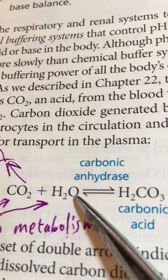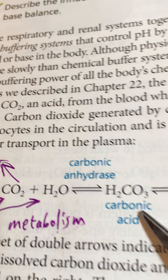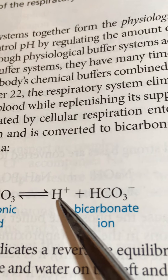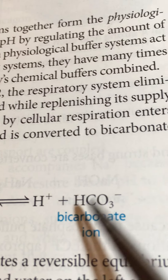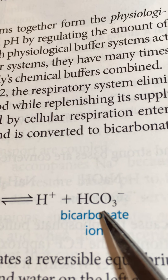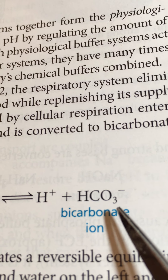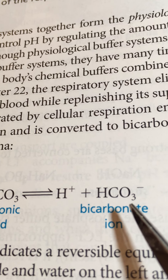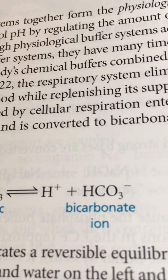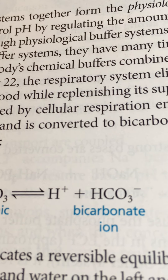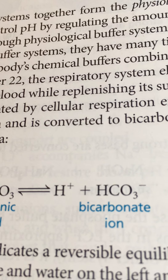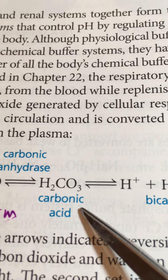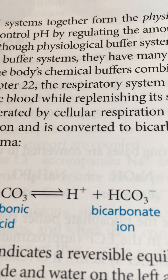CO2 goes into the fluid portion of the blood and combines to form carbonic acid, which is normally fully ionized as a hydrogen ion and bicarbonate. So CO2 travels through the blood mostly as bicarbonate. A little bit is dissolved as CO2, and some travels on hemoglobin on the trip back to the heart and ultimately to the lungs. Mostly, the conjugate base of carbonic acid — bicarbonate — serves as our buffer.